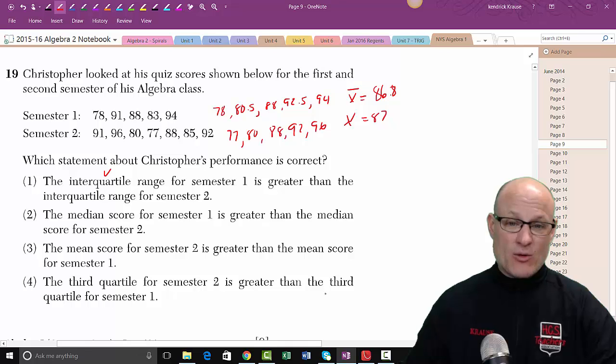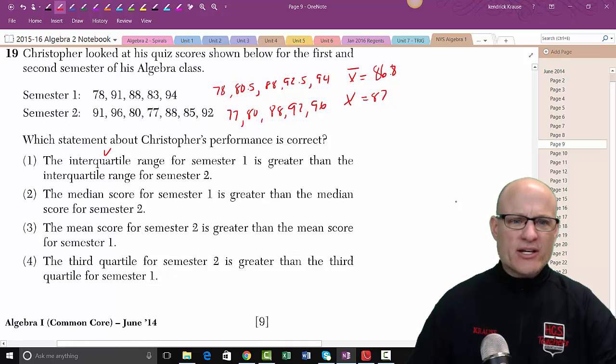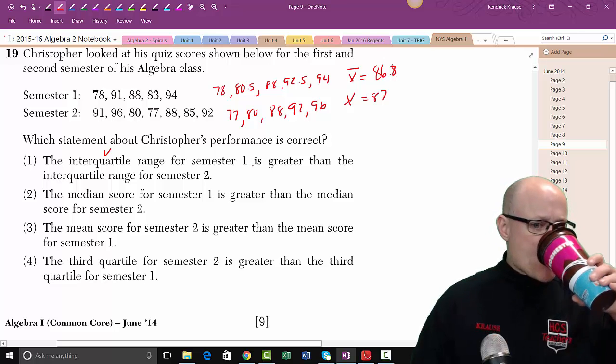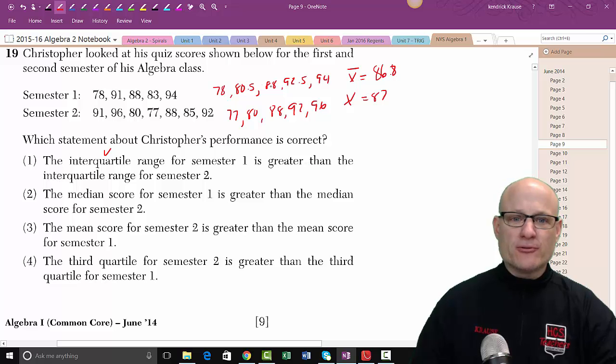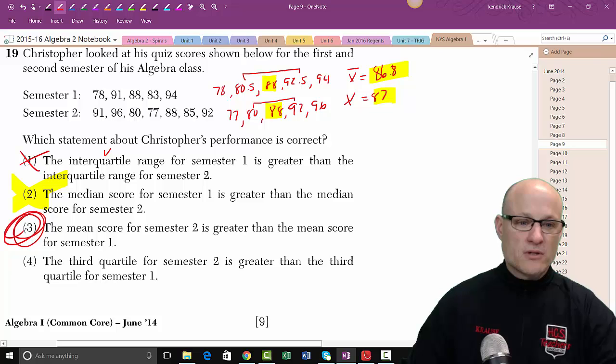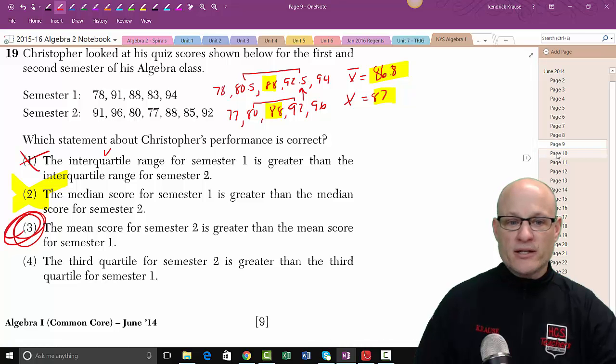Let's see, the interquartile range for semester one is greater than semester two. Semester one, my interquartile range is 12, for semester two it's 12, those are the same, nope. The median score for one is greater than the median score for two, 88, 88, nope. The mean score for two is greater than the mean score for one, 87 is bigger than 86, hey it looks like we found our winner. The third quartile score for semester two is greater than the third quartile score for semester one, third quartile is not bigger, it's less. There you go kids, done, next problem.